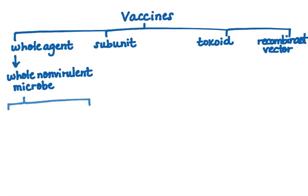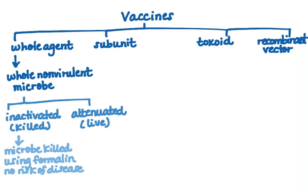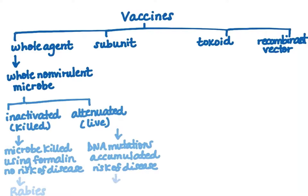A whole agent vaccine contains a whole, non-virulent microbe that is either inactivated (killed) or weakened (attenuated). An inactivated vaccine is a killed vaccine — the microbe has been killed using formalin, and there is no risk of disease; a prime example is the rabies vaccine. A live attenuated vaccine is one where the microbe has undergone multiple rounds of cell culture, accumulating DNA mutations, so there is a small risk of disease — as with the MMR vaccine.